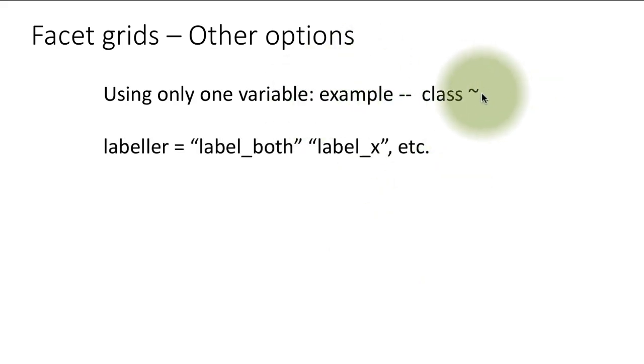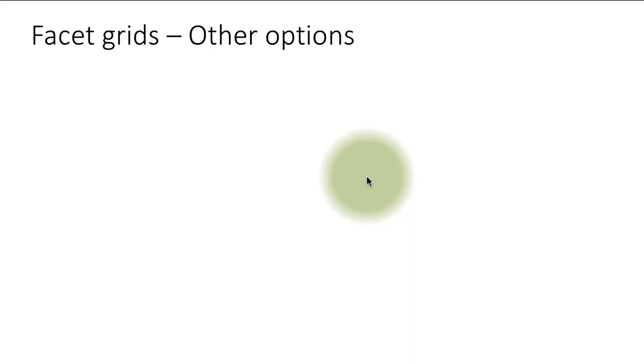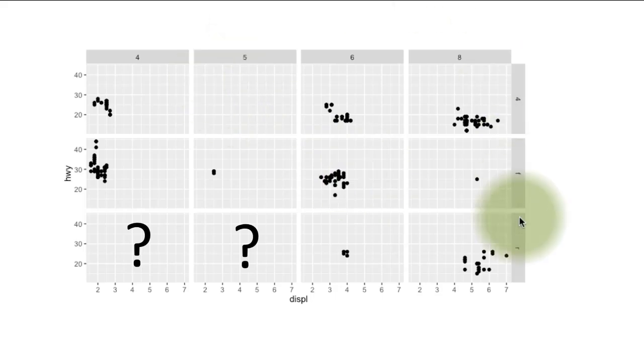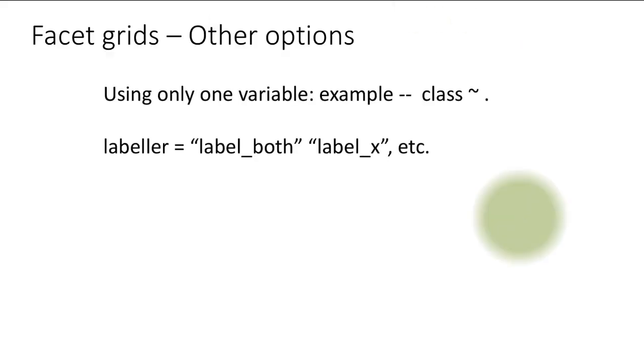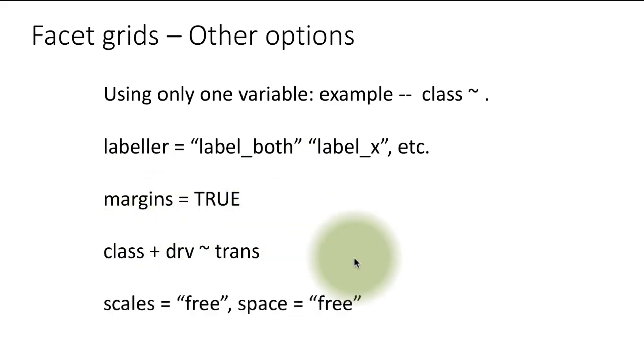There are many other options for facet grids. We won't get into those options, but just to let you know there are things you can control. For example, if you want to use only one variable for facet_grid, you can do this. You can label x and y axes. By default label_both is the option. If you want to increase margins or have margins, you can say margins equals TRUE. Or you can even have expressions like this, which we will look at later on.